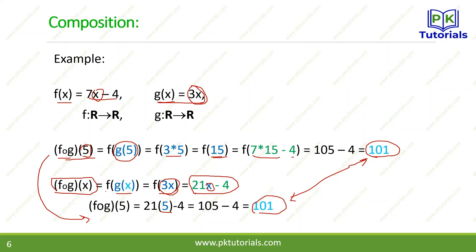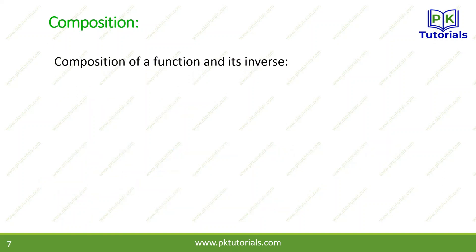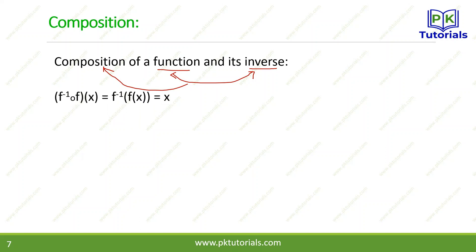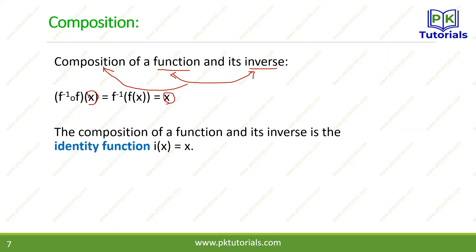We have two functions and their composition. When we compose two functions with their inverses, we get the identity function. The identity function means that for two functions, their composition with the respective inverse is the identity.